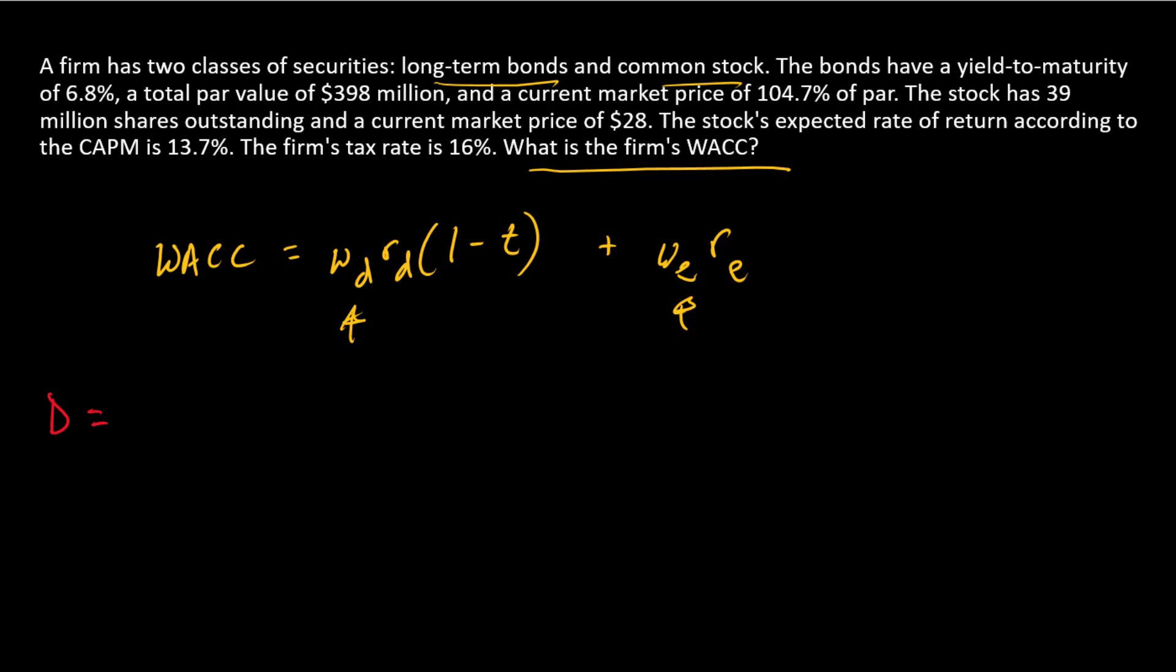That is going to be the par value of the debt times the price as a percentage of par. So we've got $398 million. I'll leave everything in millions. And we're going to multiply that by 1.047, since the price of the debt is 104.7% of par. So the total market value of the debt is 416.706.